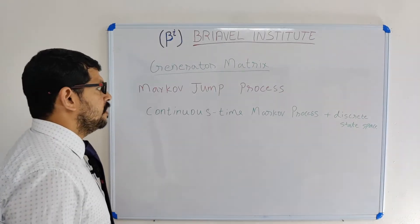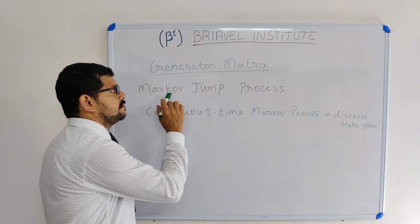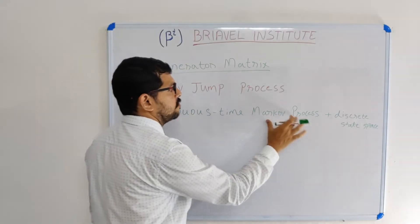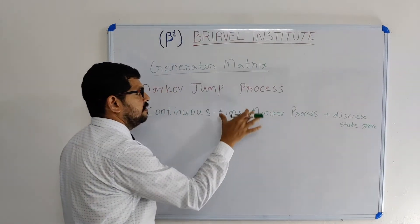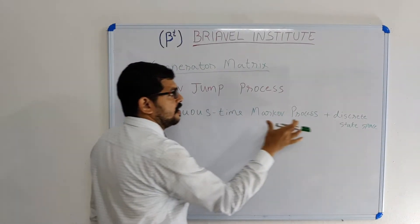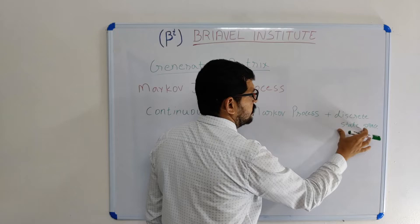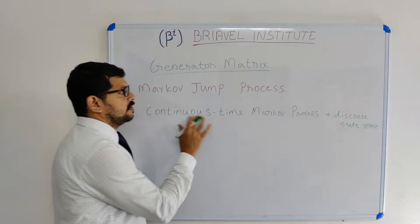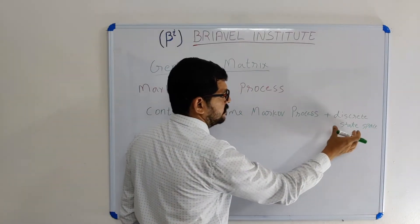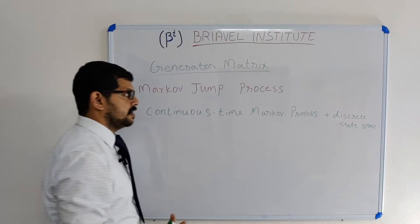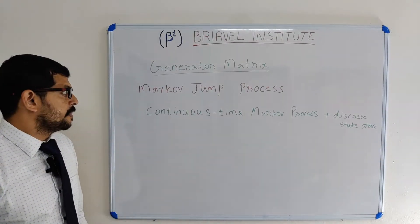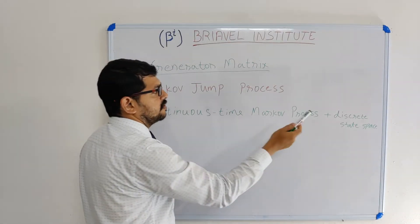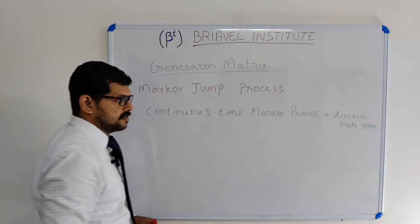What is the Markov-Gem process? The Markov-Gem process is a continuous time Markov process with discrete state space. We know what continuous time and discrete state space mean — we already discussed it in earlier classes. The Markov-Gem process is a continuous time Markov process with discrete state space.